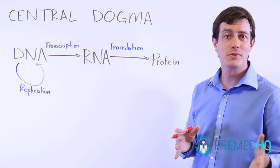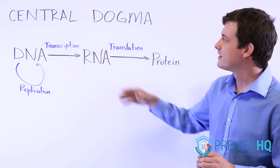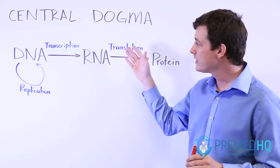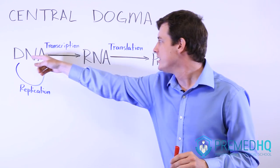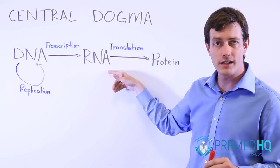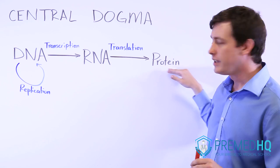So here we'll go over a concept that you've probably encountered before, and it's known as the central dogma. What it says is that DNA is transcribed into RNA, which is then translated into proteins.